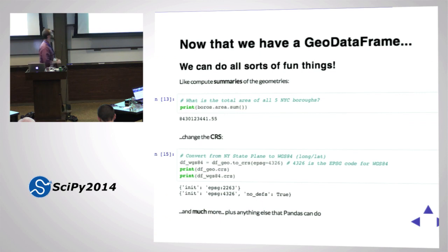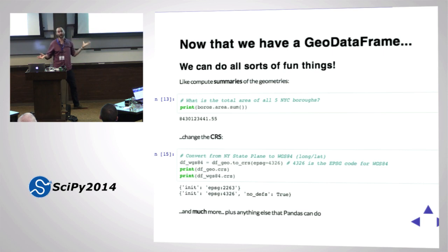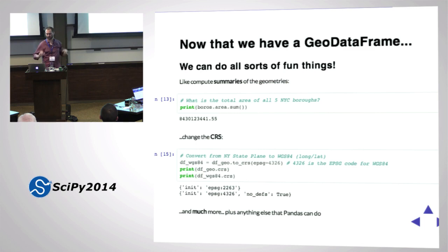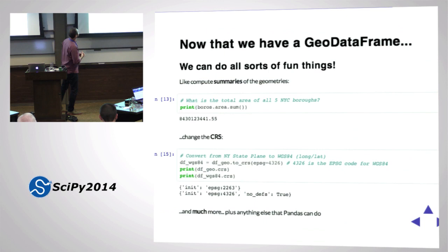Now we can do cool stuff. Working with the boros polygon shapefile: boros.area.sum() gives the total area of New York City in square feet. Not a really useful measure of the area of the city, but there you go.